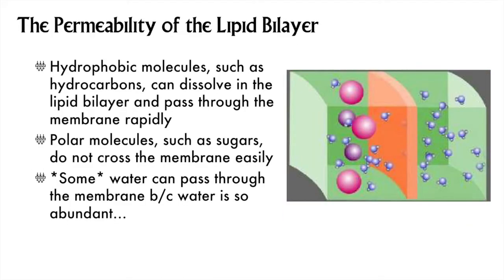The phospholipid bilayer, without accounting for proteins yet, is permeable to non-polar molecules. Hydrocarbons, for example, can pass through easily and rapidly. Gases, which are typically non-polar, can also pass through the membrane easily — oxygen gas, carbon dioxide, nitrogen gas. But once polar molecules like simple sugars, amino acids, etc. try to get in or out, it's sorry buddy, no can go.